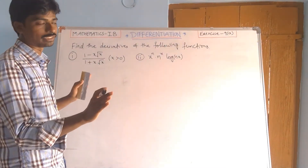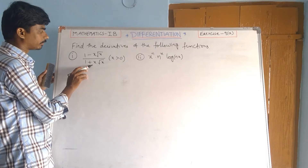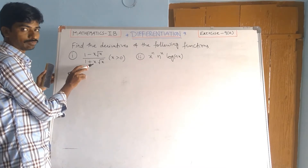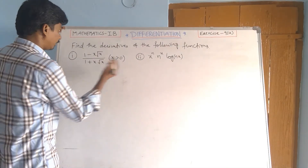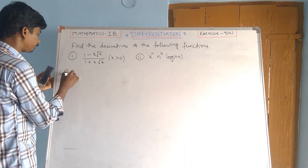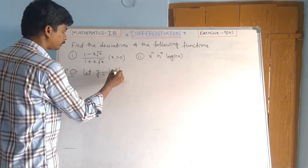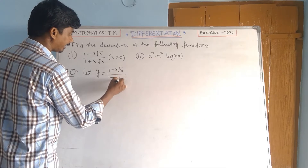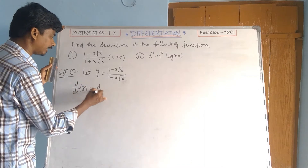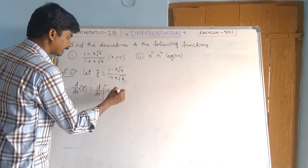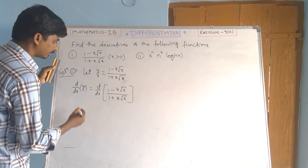From the first principle, we apply here the u by v rule. Remember that one. See here — solution, row number 1: let y equal (1 minus x root x) by (1 plus x root x).